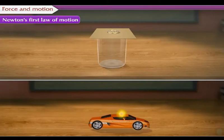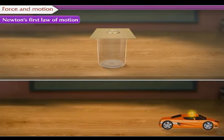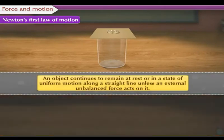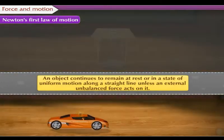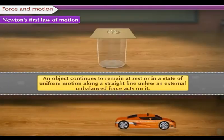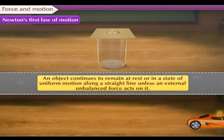Newton's First Law of Motion: An object continues to remain at rest or in a state of uniform motion along a straight line unless an external, unbalanced force acts on it.